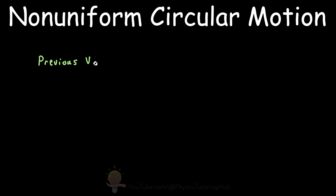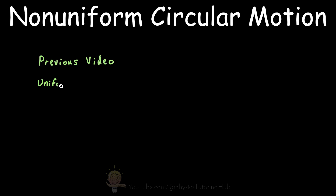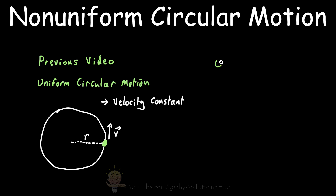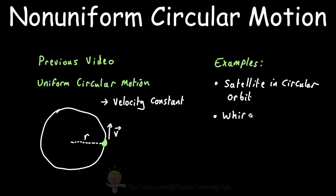In a previous video, we looked at how Newton's second law can be applied to objects in uniform circular motion. Uniform circular motion refers to an object moving in a circular path at a constant speed. This constant speed is important — the object is not speeding up or slowing down. Examples include a satellite orbiting the Earth in a perfectly circular orbit, or a ball on a string swung around your head at a constant rate.